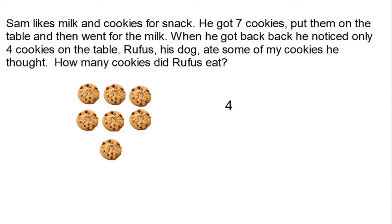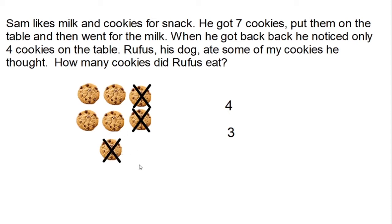So I got close. I need a number that's close to four but less. So I'm going to guess three. And again I'm going to use X's to indicate the cookies I think Rufus ate. Three. And we'll see how many are left. One, two, three, four. That's correct — I have four cookies left. So if Rufus ate three, it would leave me four. The solution to our problem using the guess and check strategy is three. Rufus ate three cookies.